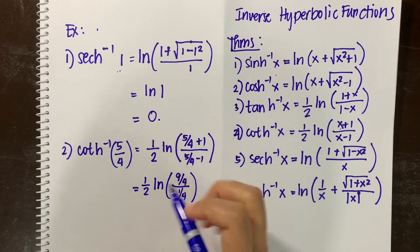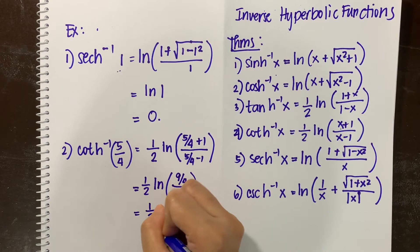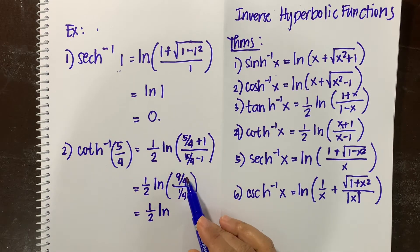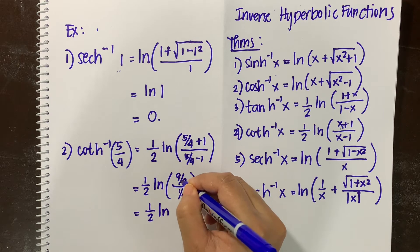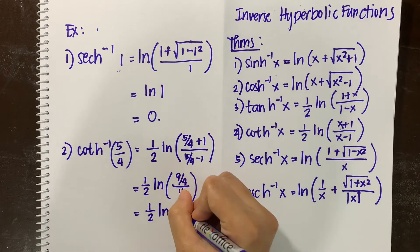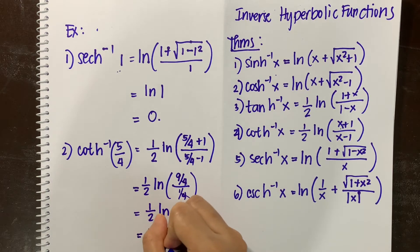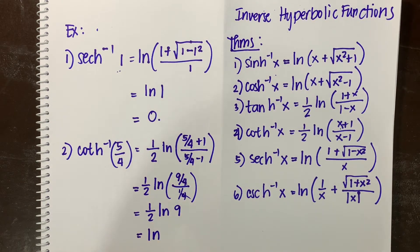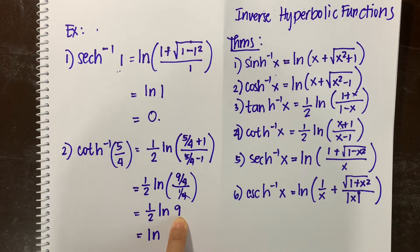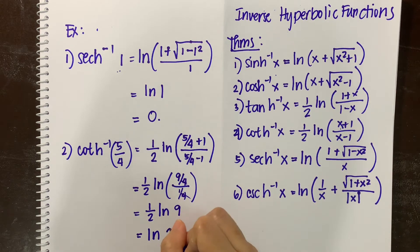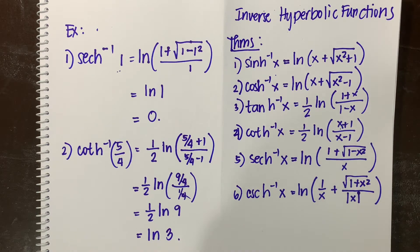Simplifying further, we have one-half of ln of 9/4 all over 1/4. The denominator of 4 cancels, yielding one-half of ln of 9. Using logarithm properties, the one-half becomes the exponent of 9, giving us ln of 9 raised to the one-half. Since 9 raised to the one-half is the square root of 9, that equals 3. Therefore, the inverse hyperbolic cotangent of 5/4 equals ln(3).